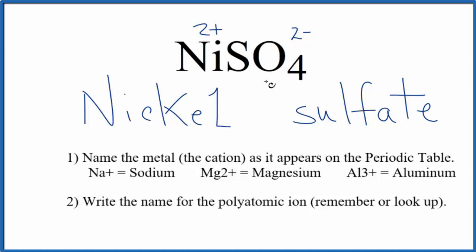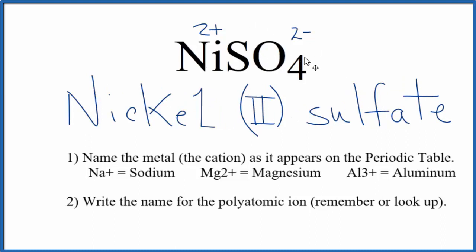We need to show that in the name. The way we do that is we put a Roman numeral II in parentheses. So the name for NiSO4 is nickel II sulfate.